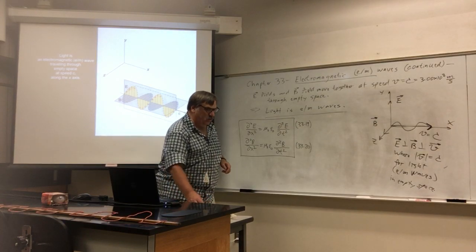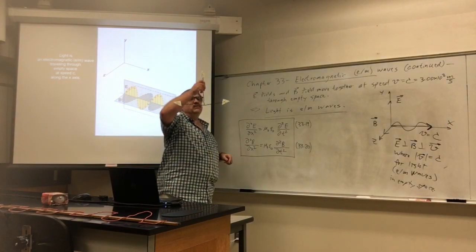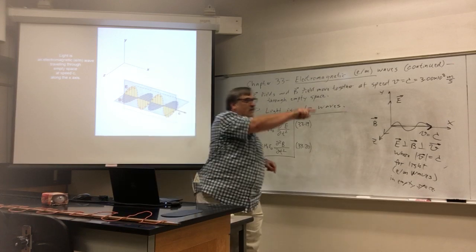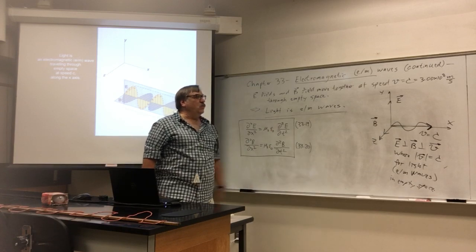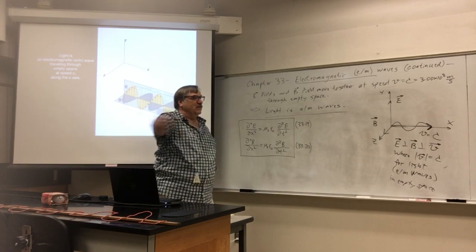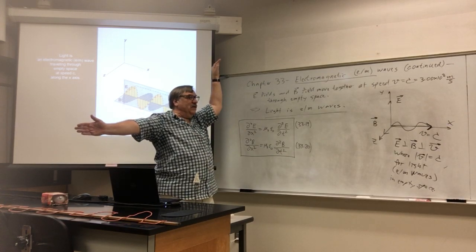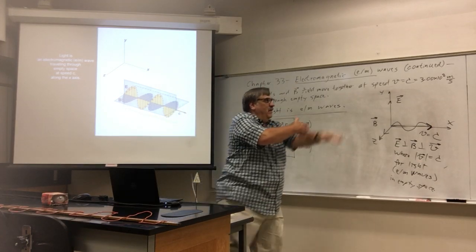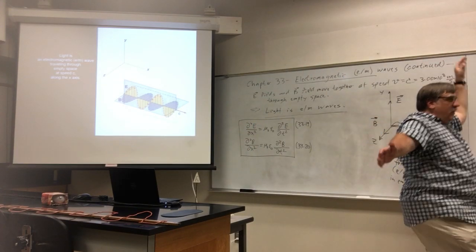I will again impersonate a ray of light traveling in the x direction. I'm traveling along at the speed of light in the x direction. My electric field is oscillating in the plus or minus y direction, and my magnetic field is oscillating in the plus or minus z direction. They're all perpendicular to each other — orthogonal. So I will now impersonate a ray of light traveling through space. That's one wavelength. That's another wavelength.